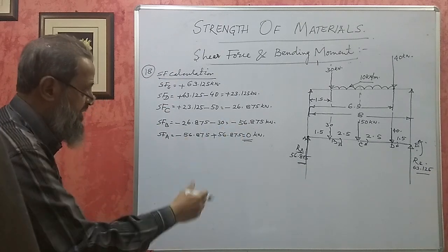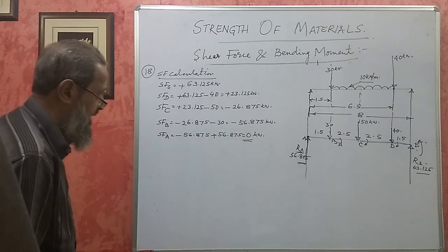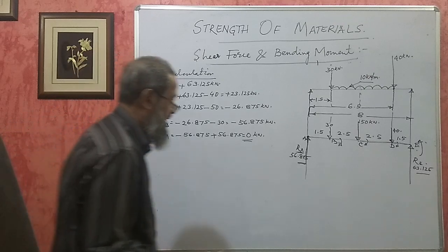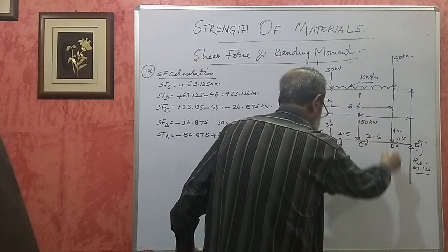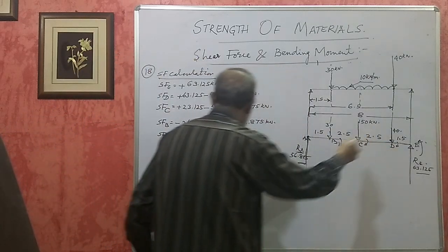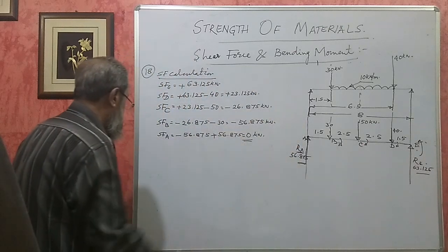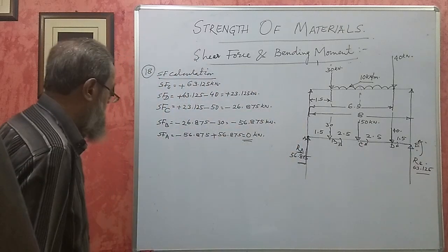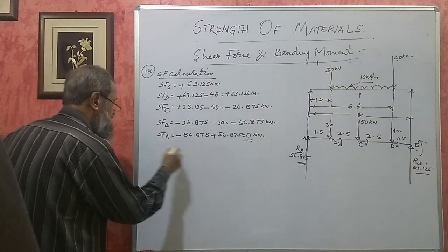Now drawing the SF diagram: at point loads, vertical lines are drawn; between the UDL region, there is an inclined line because of the uniformly distributed load. All other regions have horizontal lines.